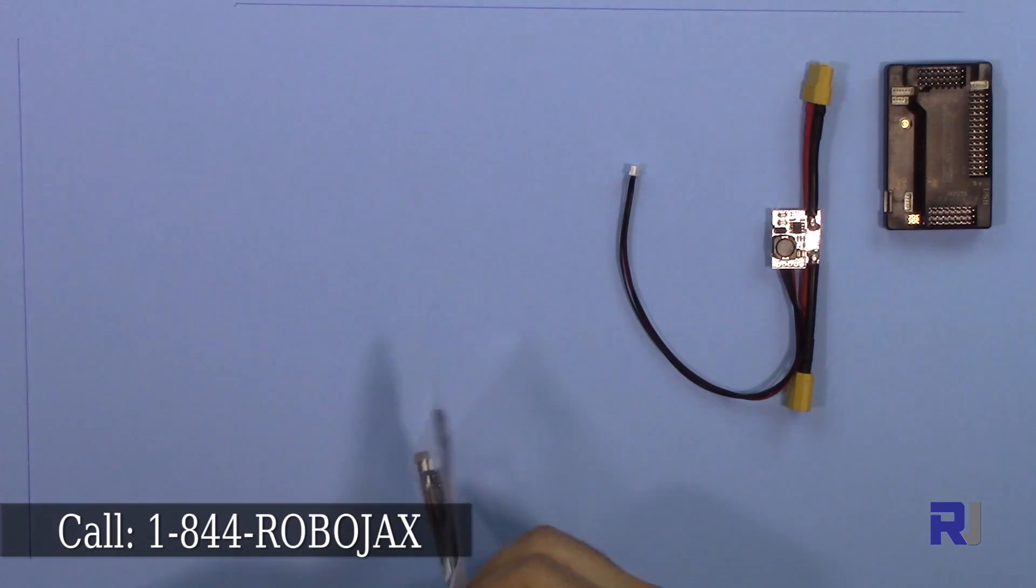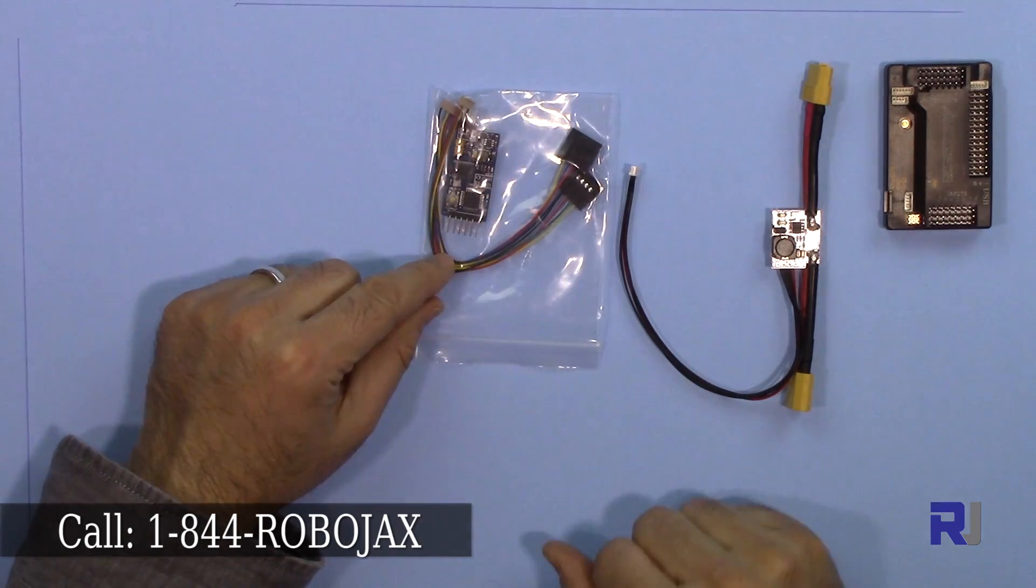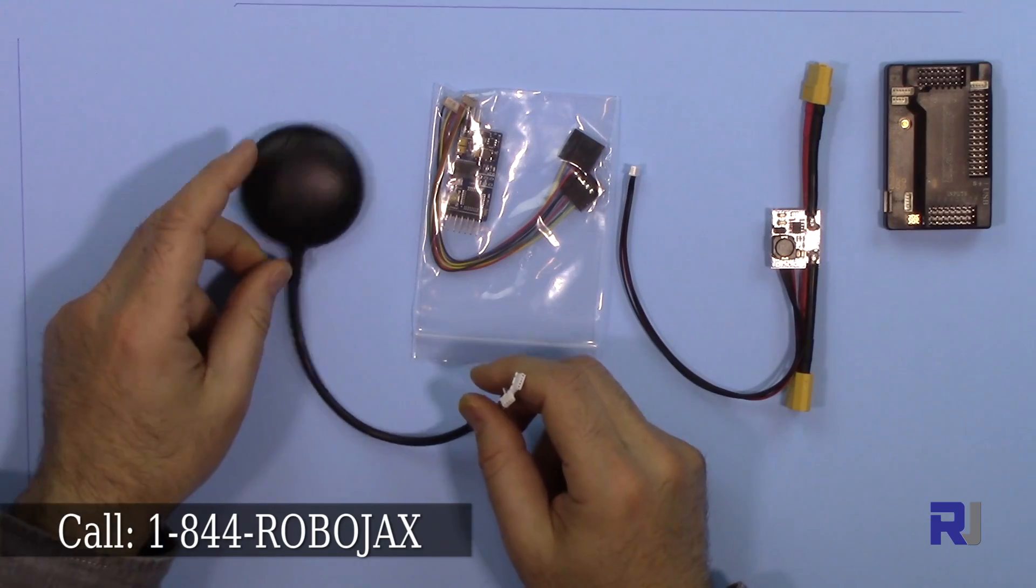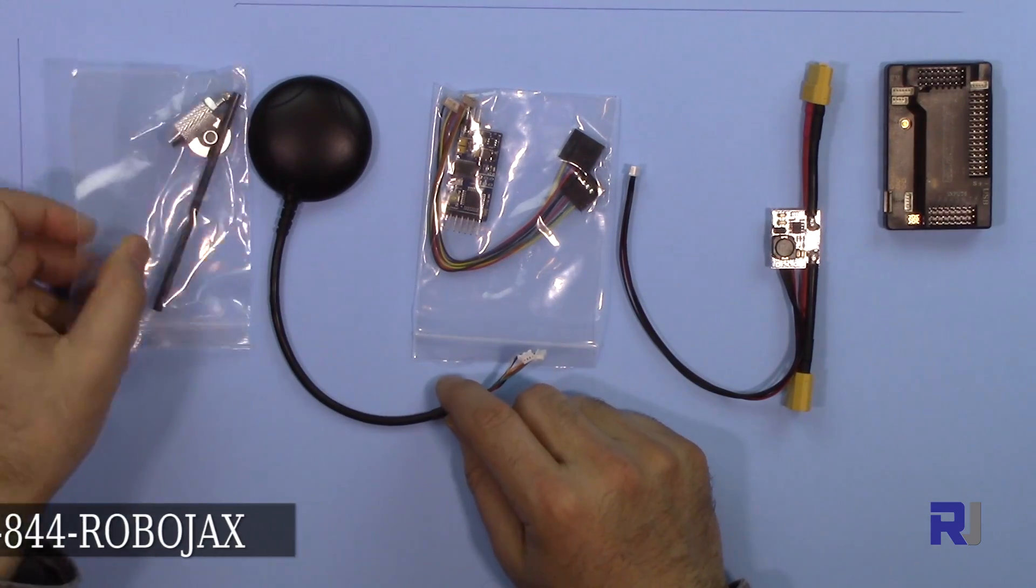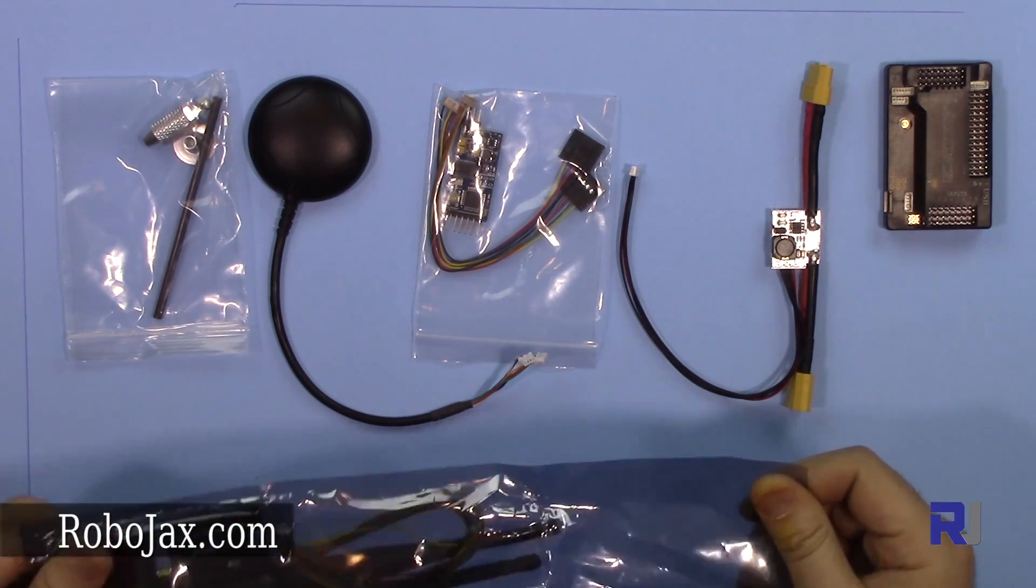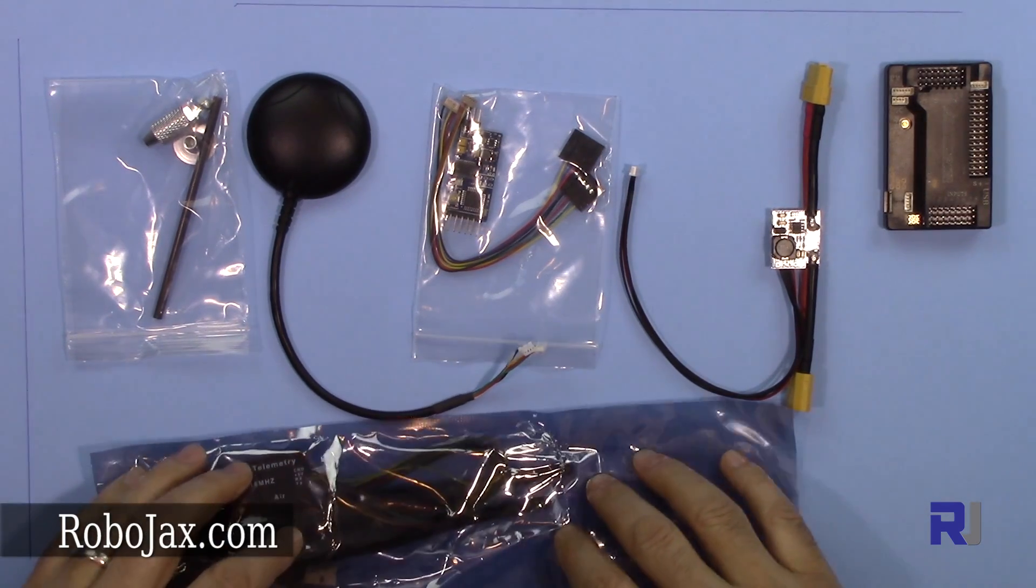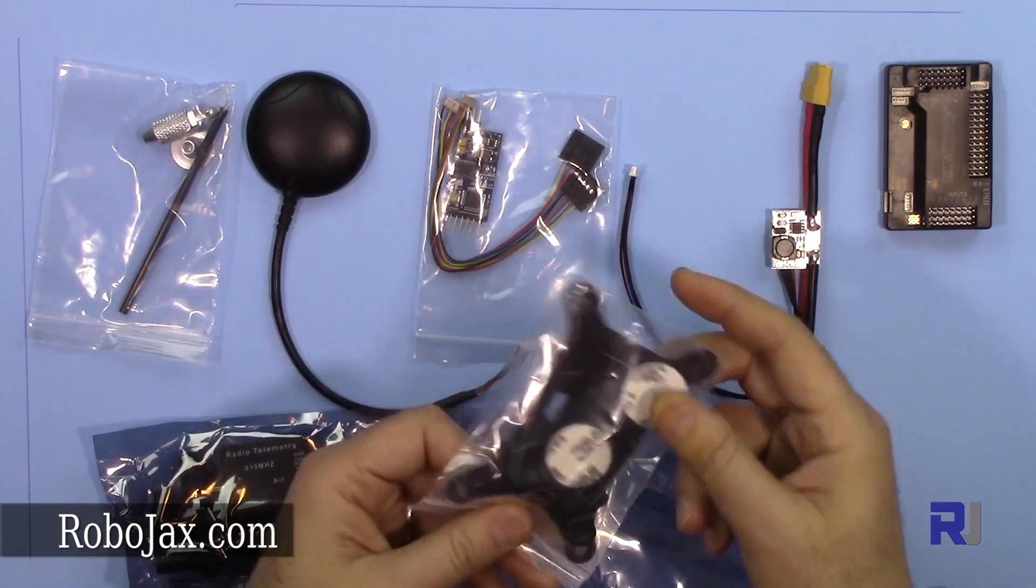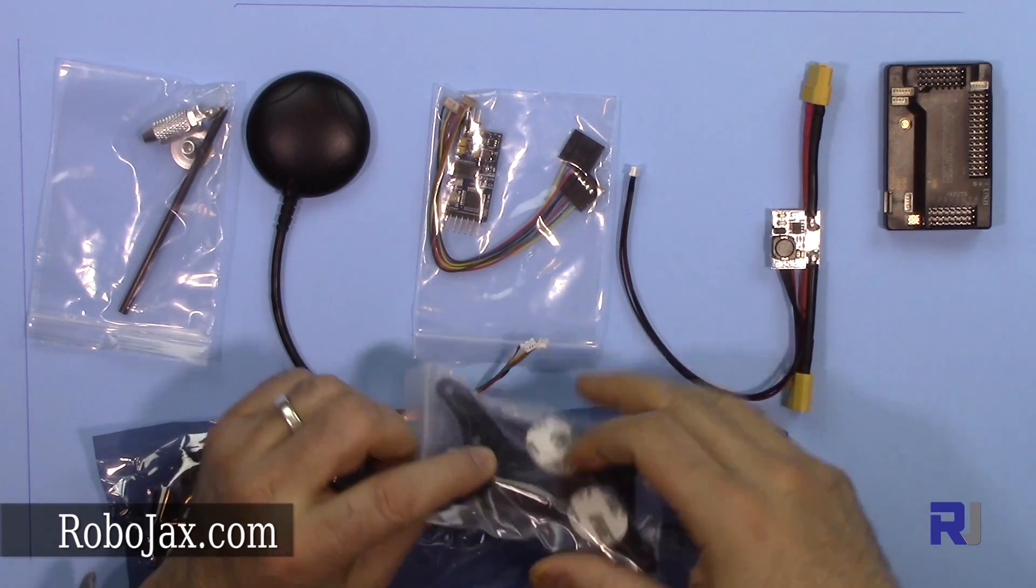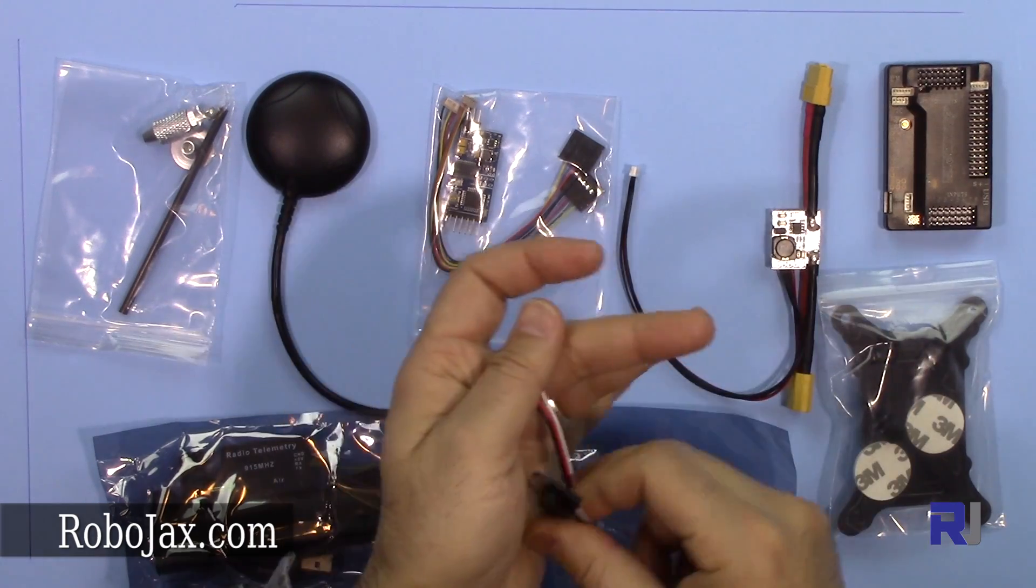You will also get the OSD, the minimum OSD module. You will get the GPS module with the stand. You will also get the telemetry kit that comes with the transmitter, receiver and antenna. You will also get the shock absorbing kit to eliminate all the vibration, and you will get the servo cables.